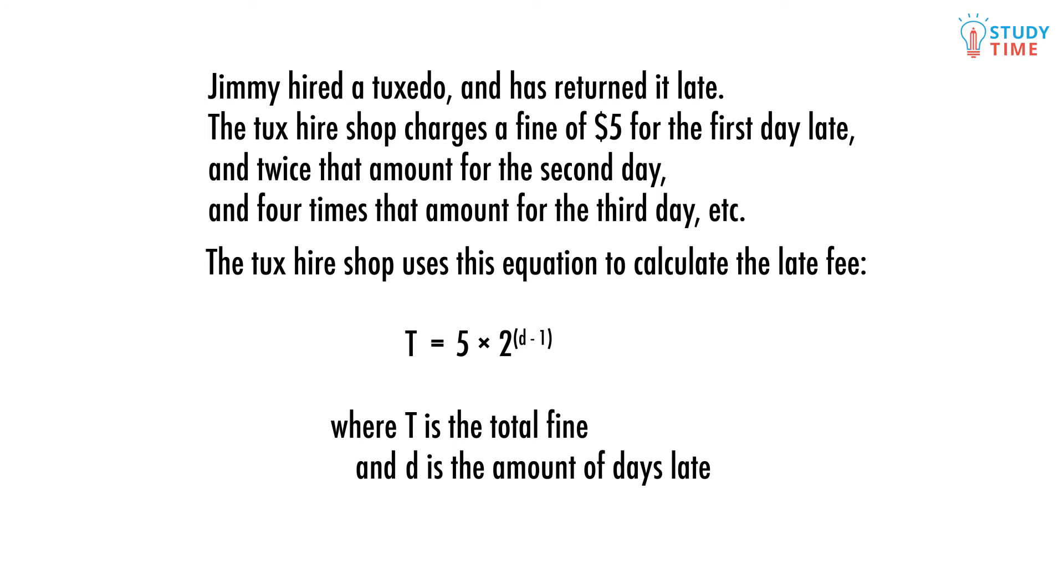Jimmy has been hiring a flashy tuxedo, except he's been late with returning it and the shop has fined him. The tuxedo hire shop has a fine of $5 for the first day late. On the second day late it's twice this amount, and on the third day it's four times this amount. The shop uses an equation to work out the total amount of the fine.